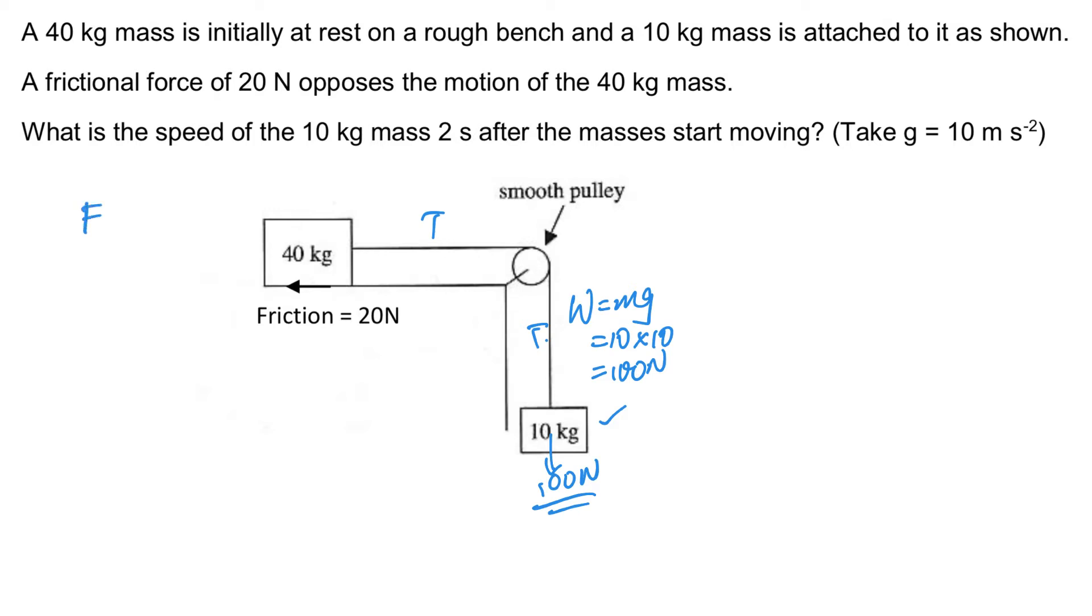Applying F equals MA, the only force pulling this whole system is the 100 Newton, and don't forget there's a frictional force of 20 Newton acting on the 40 kg mass. So the resultant force on the whole system will be the 100 pulling force minus the friction, and the total mass will be the sum of these two masses, which is 50 kg times the acceleration.